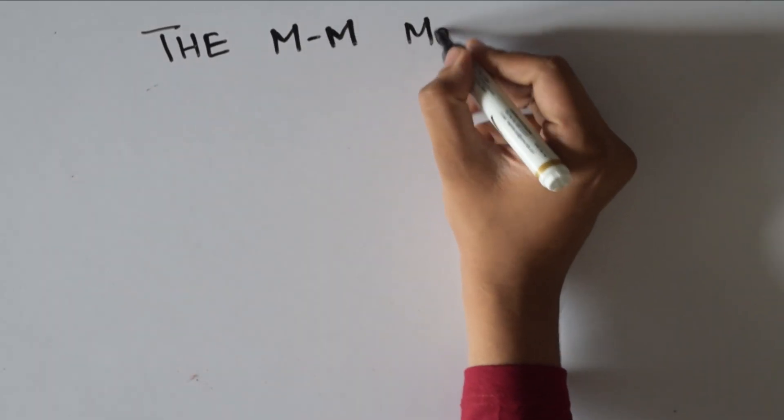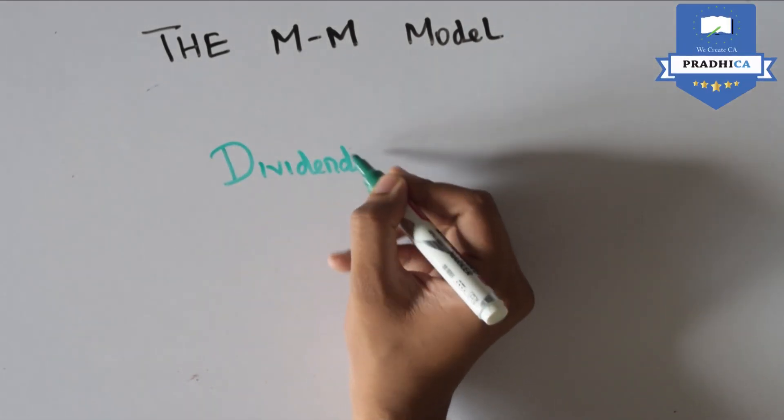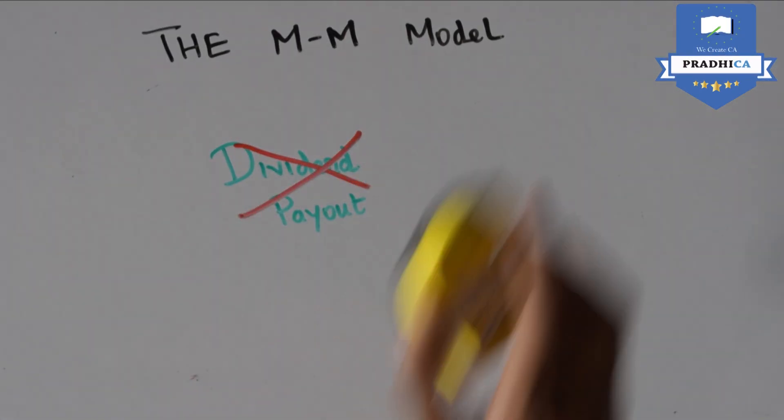The Modigliani-Miller model of dividend valuation. Modigliani-Miller suggests that the dividend payout is an irrelevant decision in valuing the company.